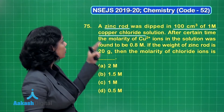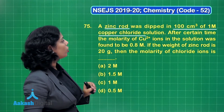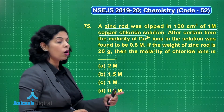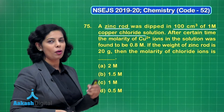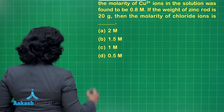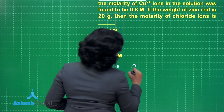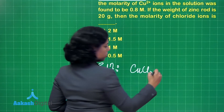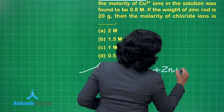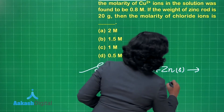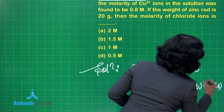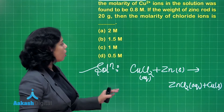When the zinc rod is dipped in copper chloride solution, a displacement reaction occurs: zinc displaces copper, forming zinc chloride. The reaction is: CuCl2 (aq) + Zn (s) → ZnCl2 (aq) + Cu (s). There is no change in the molarity of chloride ions because the only source is copper chloride.